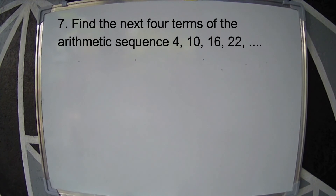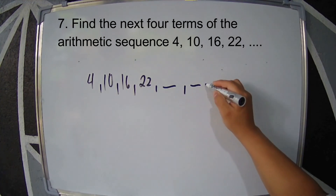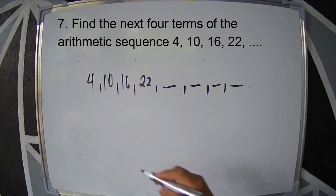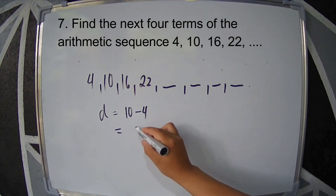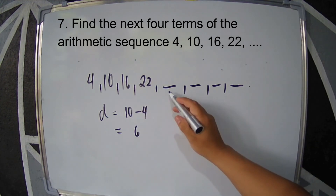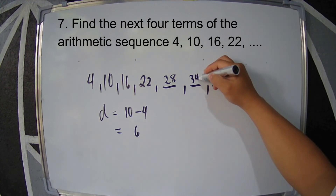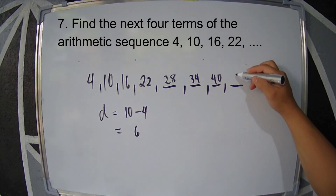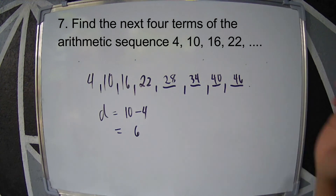Example 7: Find the next four terms of the arithmetic sequence 4, 10, 16, 22. The common difference is 10 minus 4, which is 6. Adding 6 to 22 gives 28, then 34, then 40, and the last term is 46. The next four terms are 28, 34, 40, and 46.